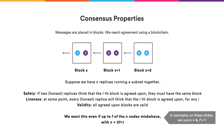More precisely, we want what we call safety — that is, if two honest replicas think they agree on the blockchain up to a certain point, then they must in fact have the same view of the blockchain up to that point. Secondly, we want liveness, meaning that the blockchain keeps growing and we keep agreeing on more and more blocks. Third, we want validity, meaning that all the blocks and the messages in the blocks are actually valid.